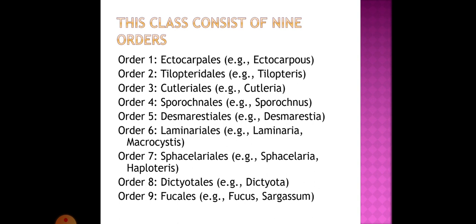Class Phaeophyceae consists of 9 orders: Ectocarpales (example: Ectocarpus), Tilopteridales (example: Tilopteris), Cutleriales (example: Cutleria), Sporochnales (example: Sporochnus), Desmarestiales (example: Desmarestia), Laminariales (example: Laminaria, Macrocystis), Sphacelariales (example: Sphacelaria, Halopteris), Dictyotales (example: Dictyota), and Fucales (example: Fucus and Sargassum).